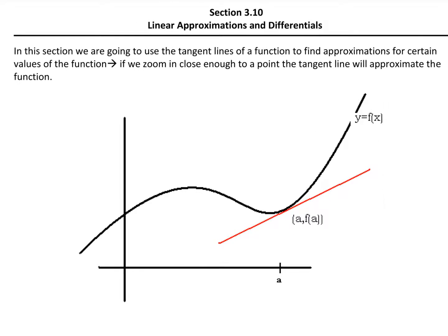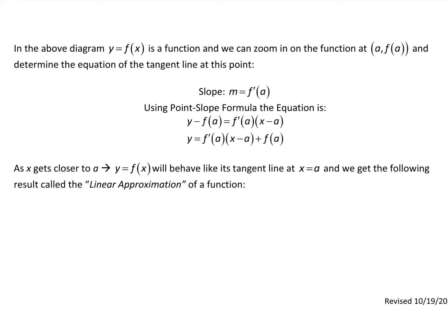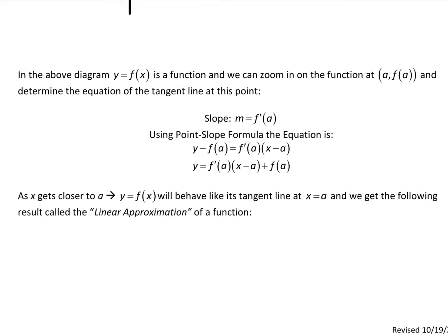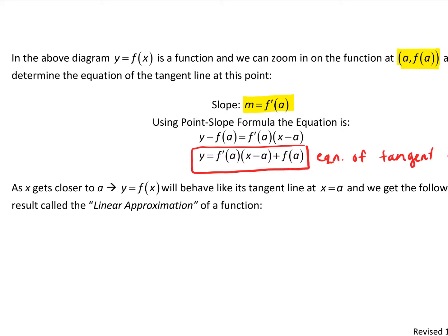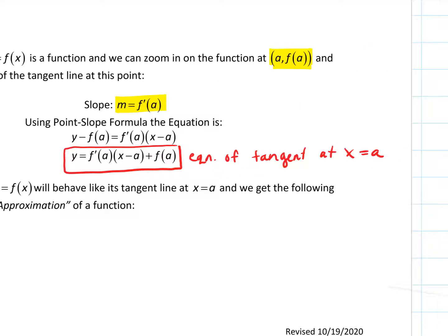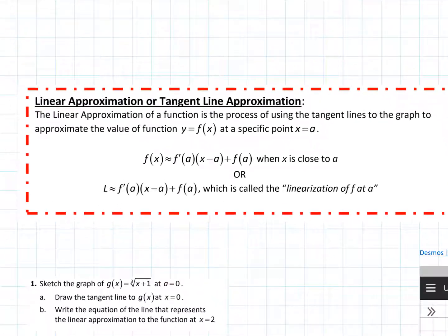To come up with the equation of a tangent line, we simply find the slope, then use the point-slope formula or slope-intercept formula. If we're looking at a function at a point (a, f(a)), the slope is f′(a), and we get the equation of the tangent line at x = a. You find the derivative, find the slope at a specific point by plugging that x value into the derivative, and write the equation of the line. We end up with f′(a)(x − a) + f(a).